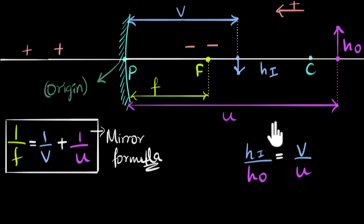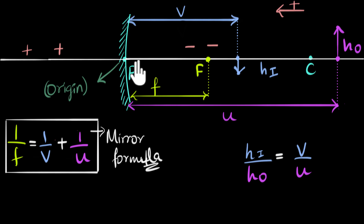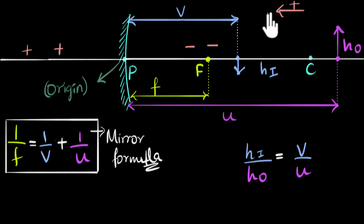Similarly, we have to do the same thing for the height formula. When it comes to heights, we're dealing with the vertical direction. So we need another sign convention for the vertical. We're always going to choose all heights above the principal axis as positive, and all heights below the principal axis as negative.